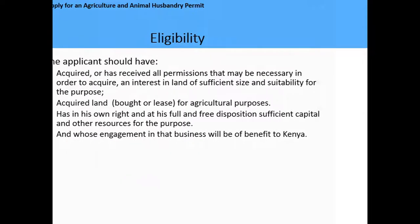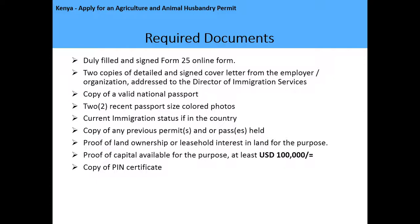The required documents are as follows: a duly filled and signed application form number 25; two copies of a detailed and signed cover letter from the employer or organization addressed to the Director of Immigration Services; a copy of a valid national passport; two recent passport-size photographs; your current immigration status — if you are in the country you can apply for a special pass; a copy of any previous permit or passes held; proof of land ownership or leasehold agreement for agricultural purposes in Kenya; and proof of available capital of at least 100,000 US dollars.